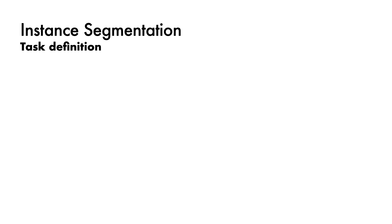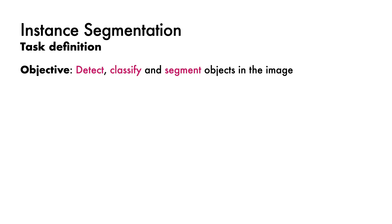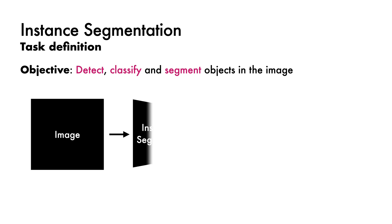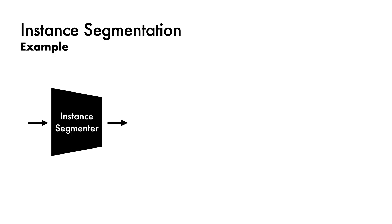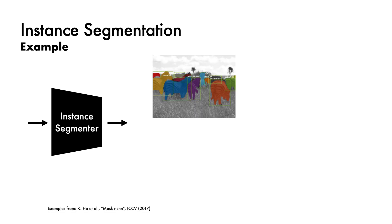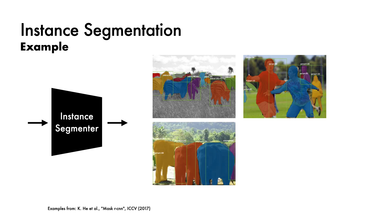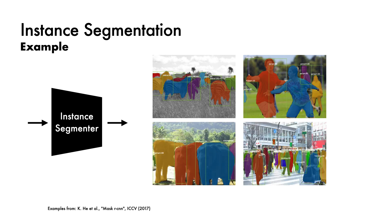The next task, instance segmentation, is simple to grasp once you understand object detection and semantic segmentation — you effectively combine them. The task is to detect, classify and segment objects in the image. Given an image, the instance segmenter aims to find the objects, classify them, and segment them from the background. We can see this in action on a few different images — segmenting zebras, frisbee players, elephants and crowded street scenes, all to a fairly high degree of accuracy with modern computer vision.